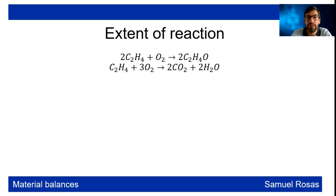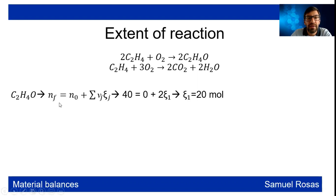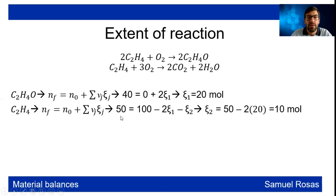Using the extent of reaction method: for C₂H₄O, which appears only in reaction 1, the final moles (40) equals 0 plus 2 (stoichiometric coefficient) times ξ₁, giving ξ₁ = 20 moles. For C₂H₄, the final moles (50) equals 100 minus 2 times ξ₁ minus 1 times ξ₂. Substituting ξ₁ = 20, we get ξ₂ = 10 moles.